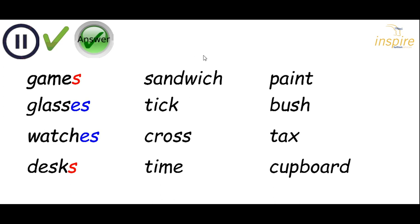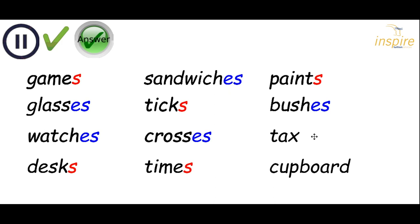Sandwich: sandwiches, ES. Tick: ticks, just an S. Cross: crosses, ES. Time: times, just add S. Paint: paints, just add S. Bush: bushes, just add ES. Tax: taxes, add ES. Cupboard: cupboards, just add S. So if we look at these words again, they end in S, CH, CH, S, CH, X — we add the ES. Just another way to remember it.